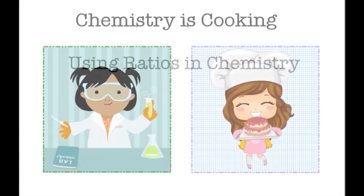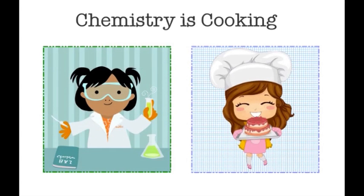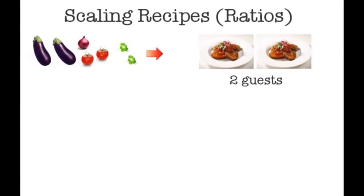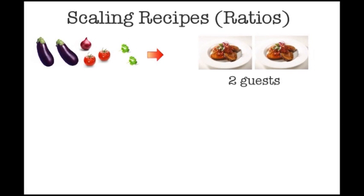The first thing to realize is that chemistry is cooking, and a key skill of any chef or chemist is the ability to scale a recipe up or down depending on how many guests are expected. That's the whole point of this screencast - ratios are about scaling.